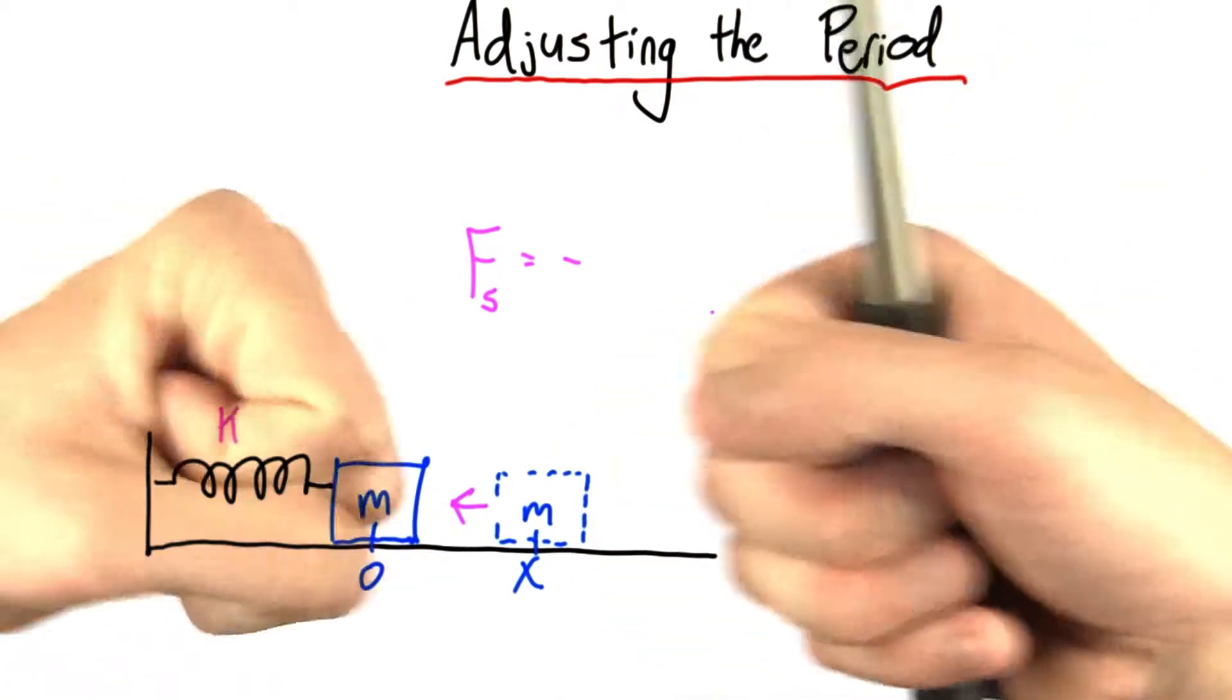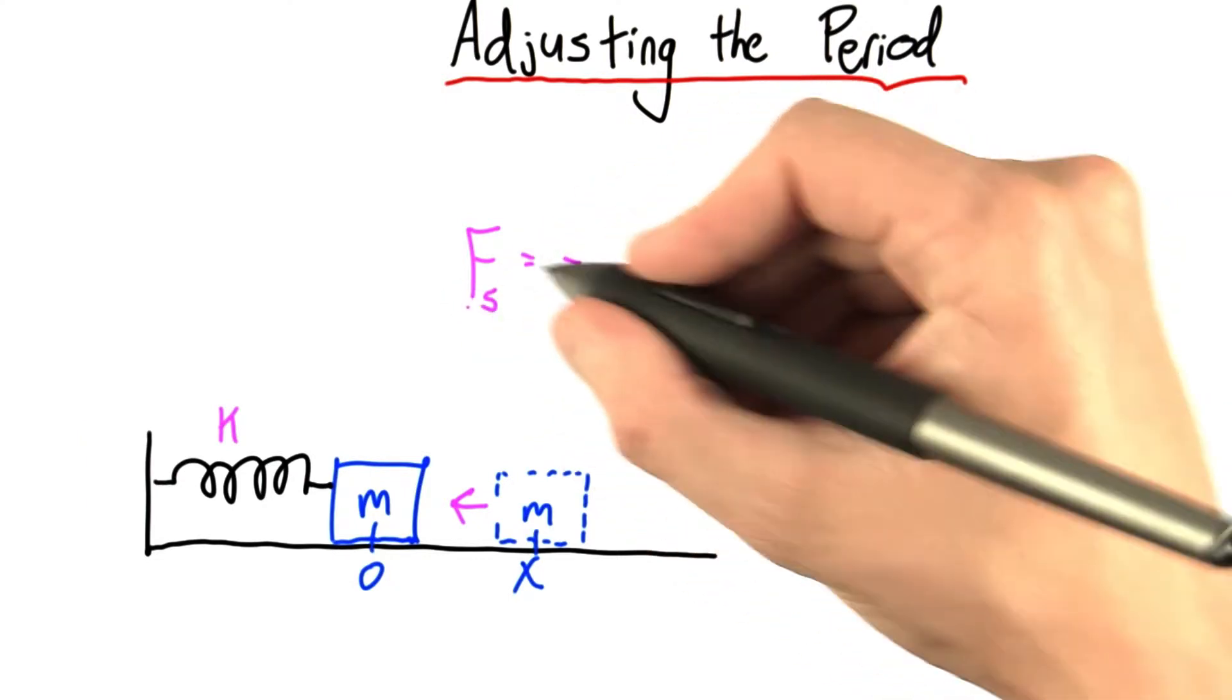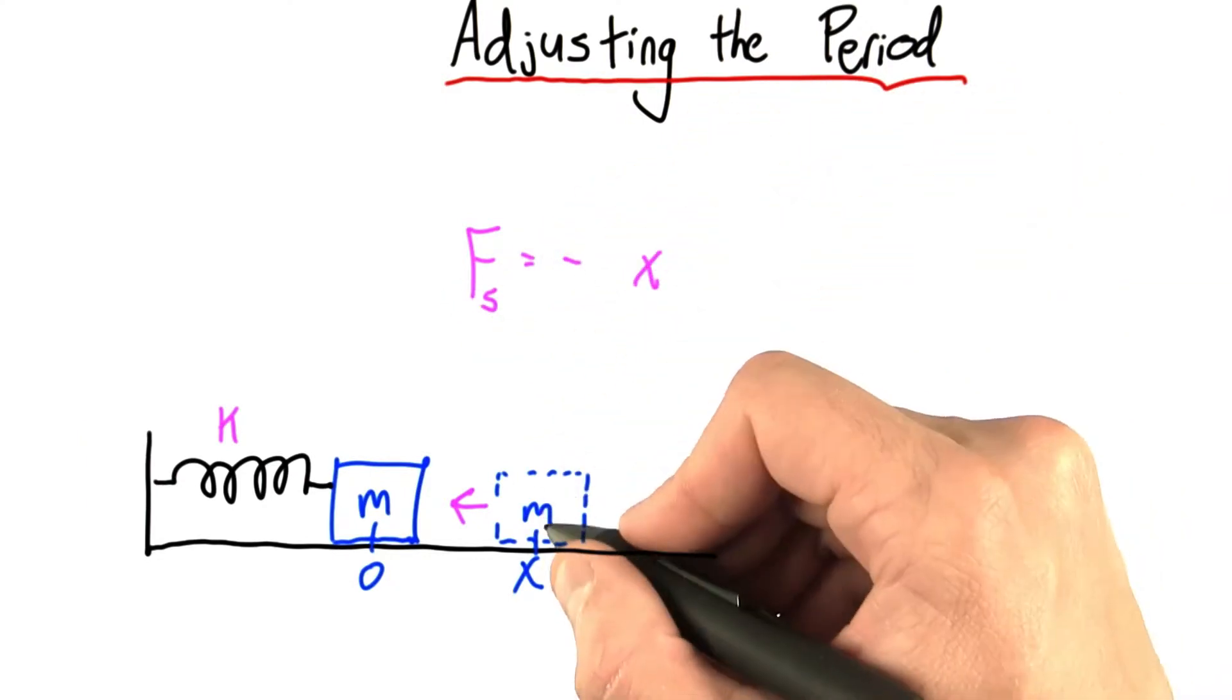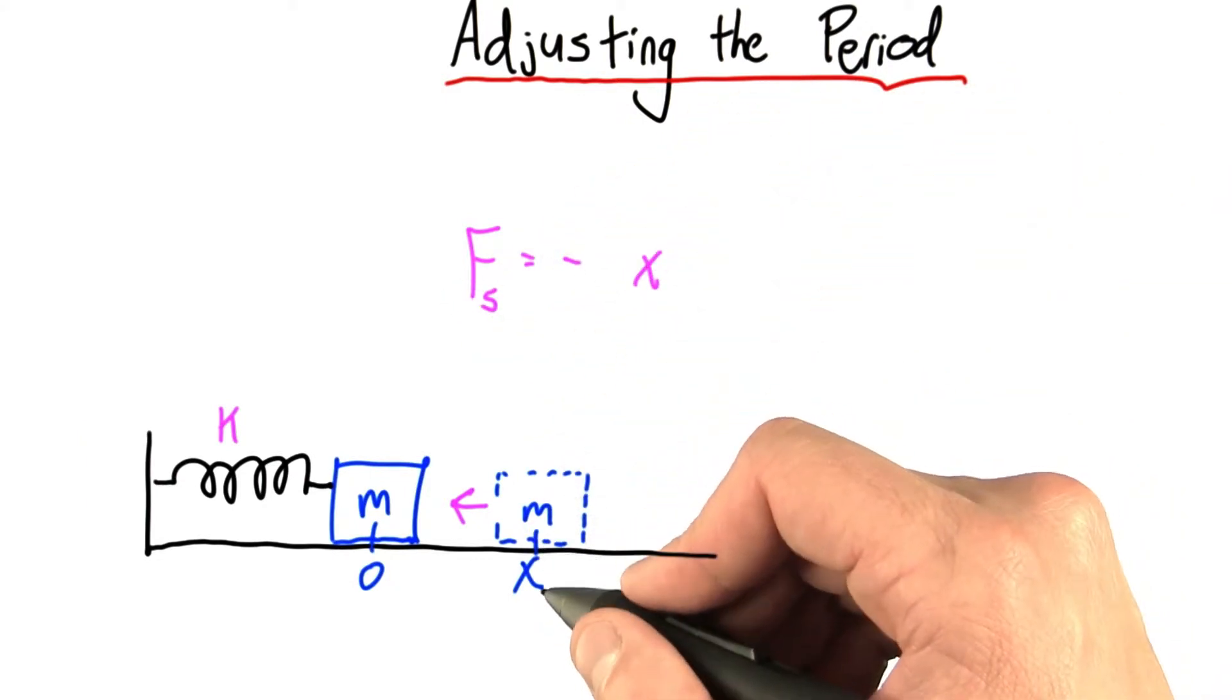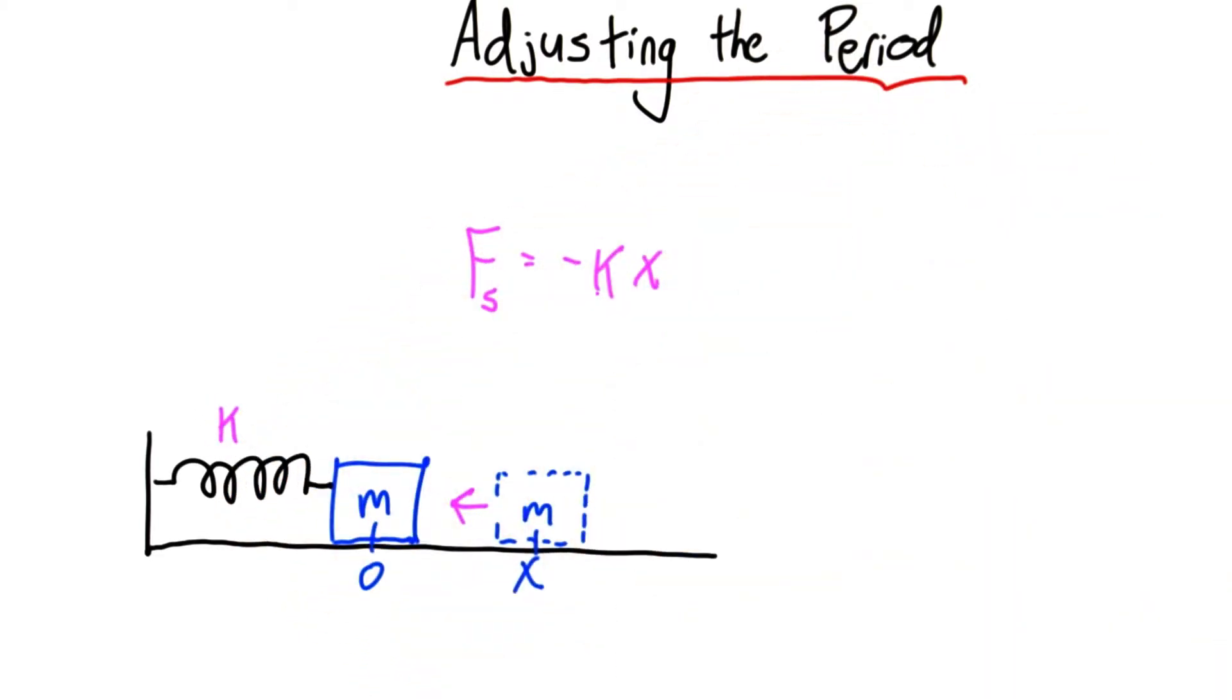If you've ever pulled on a spring, you can tell pulling it a little bit is easy. Pulling it more is more difficult. So actually, the force is proportional to how much you stretch it. And what's the constant of proportionality? Well, that's why we have this letter k. So this is the force on a spring.